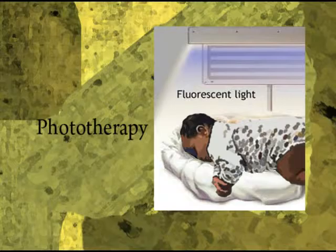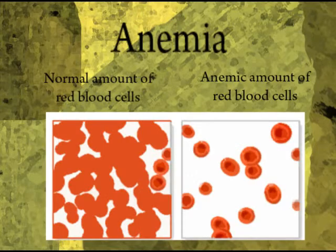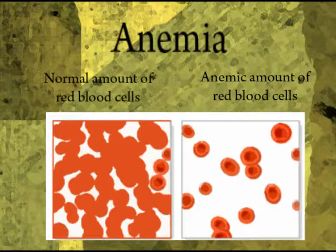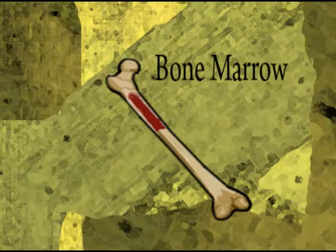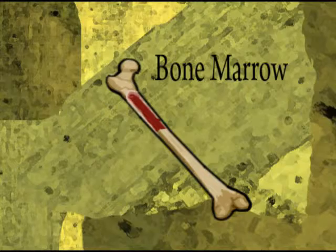Another condition that the baby can develop after getting RH disease is anemia. Anemia is a disorder in which there are too few red blood cells in the blood. Normally, the newborn's bone marrow does not produce new red blood cells between birth and one to three or four weeks of age. Any process that leads to red blood cell destruction, if sufficiently severe, will result in anemia and high levels of bilirubin.